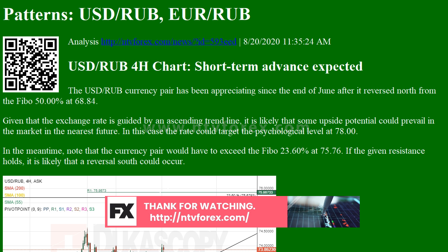Meanwhile, note that the exchange rate would have to exceed the psychological level at 90.00. If the given level holds, it is likely that a reversal south could follow. Otherwise, the rate could target the monthly R2 at 93.89.